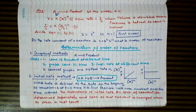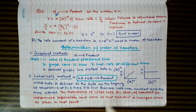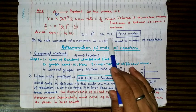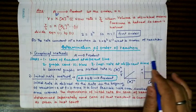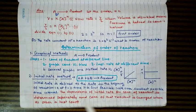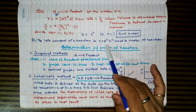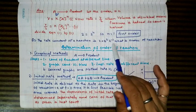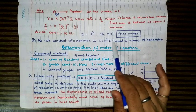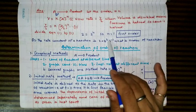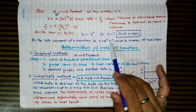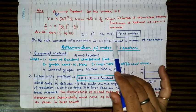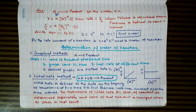One more common one-mark objective question: the rate constant of a reaction is 3×10² per hour. What is the order of reaction? In such questions, we don't need the numerical value — we only look at the unit. Since the unit is per hour (or per second, per minute), it is a first order reaction. The unit alone tells us the order.